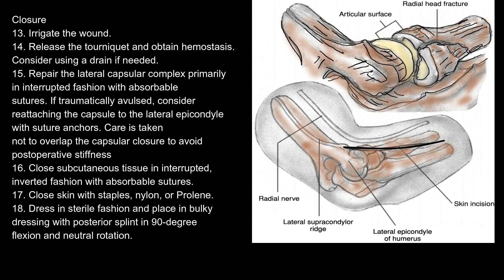16. Close subcutaneous tissue in interrupted, inverted fashion with absorbable sutures. 17. Close skin with staples, nylon, or Prolene. 18. Dress in sterile fashion and place in a bulky dressing with posterior splint in 90-degree flexion and neutral rotation.